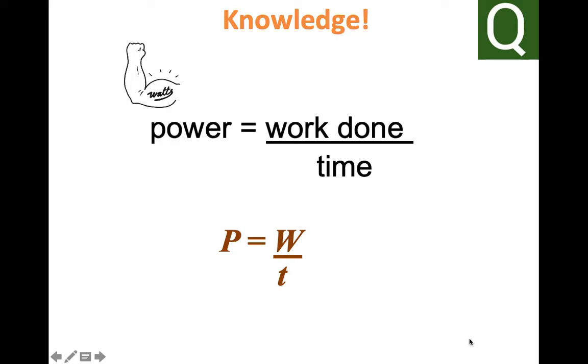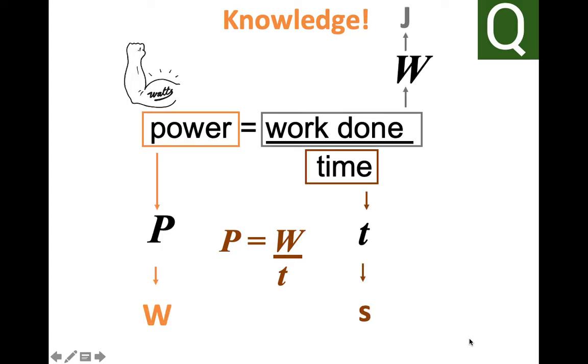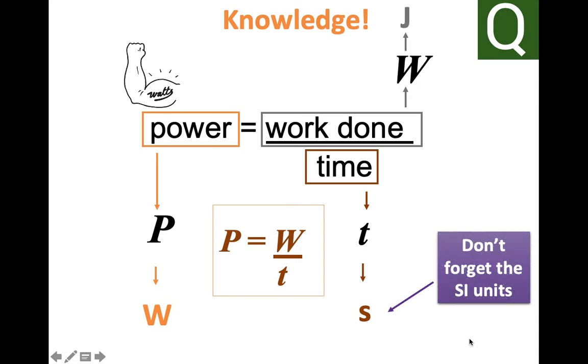Hello and welcome to another Quick Science video. Today we are looking at the GCSE physics equation that links power, work done, and time taken. It's really important that you know the units associated with each element of this equation: power is measured in watts, work done is measured in joules, and time taken is measured in seconds.